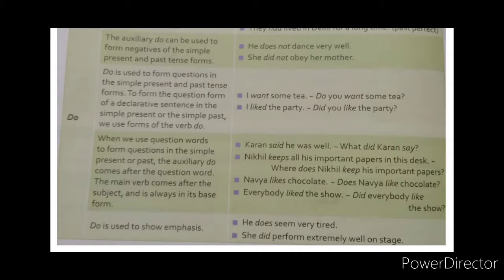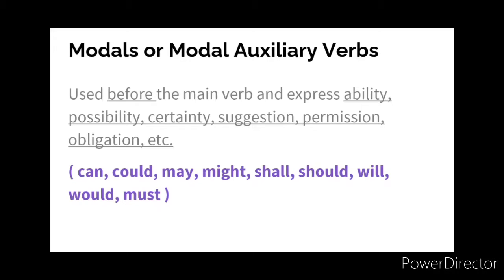The second group is modal auxiliary verbs. These are used before the main verb and they express ability, possibility, certainty, suggestion, permission, obligation, etc. For example, ability is represented by 'can,' possibility by 'could,' permission by 'may' — as in 'May I go there?' — and request is also represented by 'could' — as in 'Could you do me a favor?'